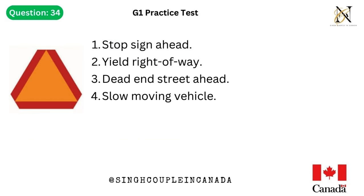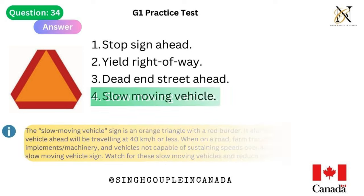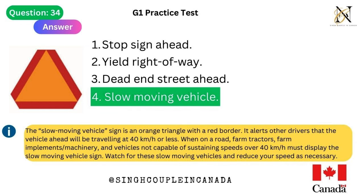Question 34. This traffic sign means: 1. Stop sign ahead. 2. Yield right of way. 3. Dead end street ahead. 4. Slow moving vehicle. Answer is 4. Slow moving vehicle. The slow moving vehicle sign is an orange triangle with a red border. It alerts other drivers that the vehicle ahead will be traveling at 40 km/h or less. Farm tractors, farm implements/machinery, and vehicles not capable of sustaining speeds over 40 km/h must display this sign. Watch for these slow moving vehicles and reduce your speed as necessary.